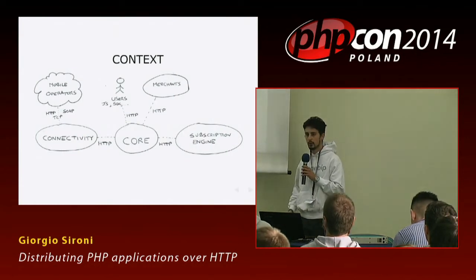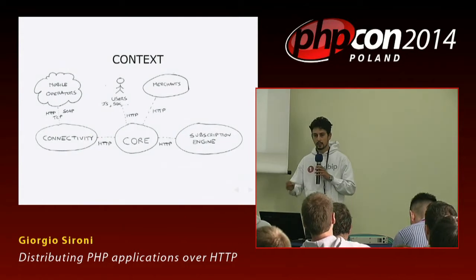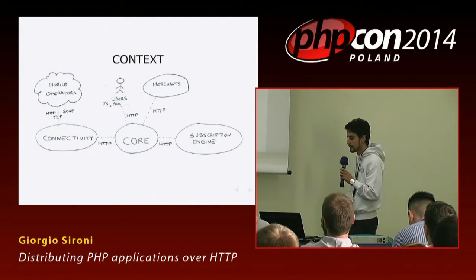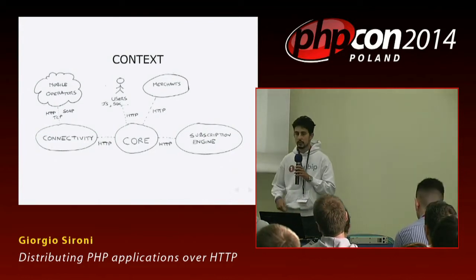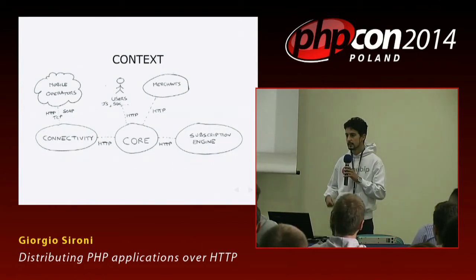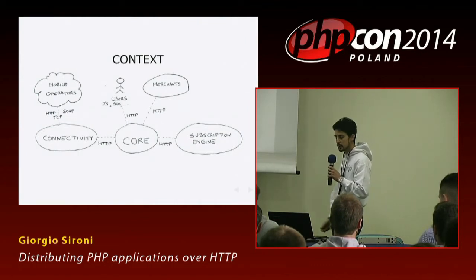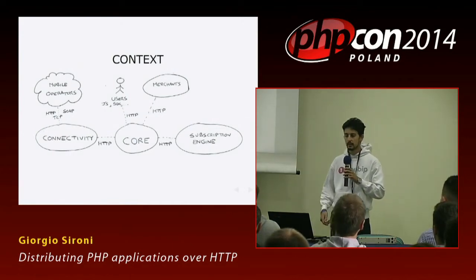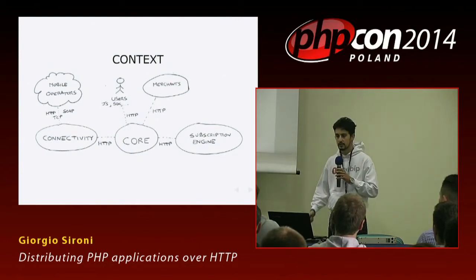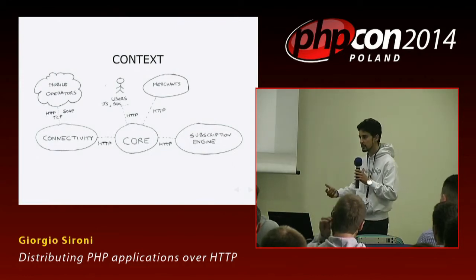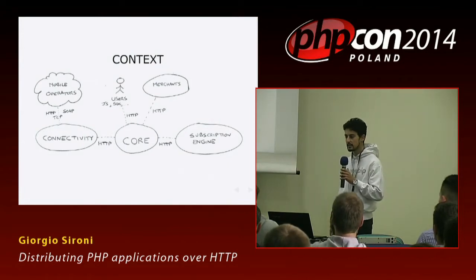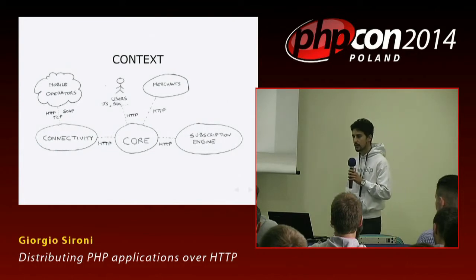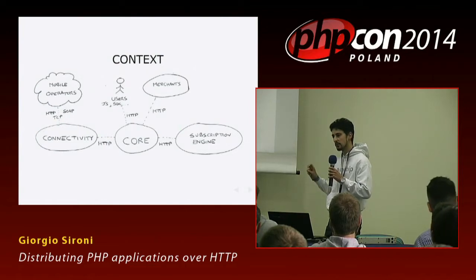What do I mean by that? We all know about monolithic PHP applications. Basically, you don't have to deal with all the responsibilities of your application in a single process in Apache talking to a single database. We can divide responsibilities into multiple services that collaborate to accomplish goals. In our case, the goal is to transfer funds from the SIM card of the user — from the credit on his prepaid card — to a particular merchant, and the user receives a digital or physical good in exchange. So we are like a PayPal of prepaid SIMs.